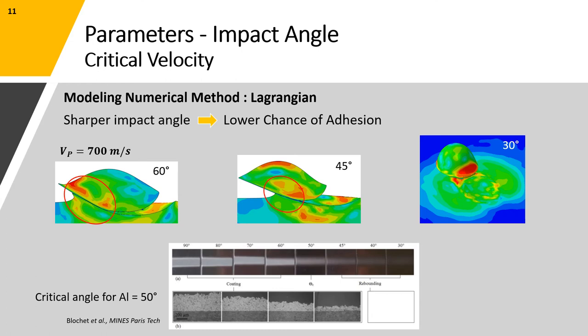It means that for more acute angles of impact, we need higher particle velocities to achieve a successful adhesion and deposition. However, for particle velocities as high as 700 meters per second, we had a very small area of adhesion for impact angle equal to 30 and almost no successful adhesion and deposition.